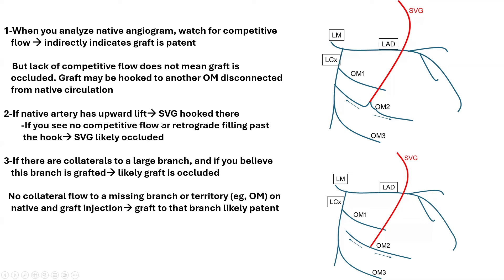The second major tip: if a native artery or branch has an upward lift or tenting, this means a vein graft is attached to that branch. If you see no competitive flow or retrograde filling past that hook, the vein graft is occluded. If you see competitive flow or retrograde filling into the graft, then that graft is likely patent.